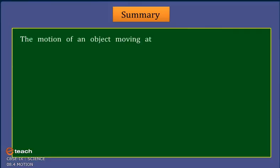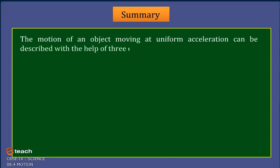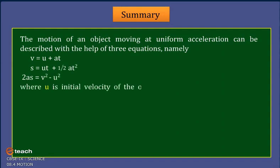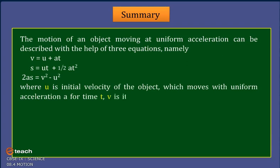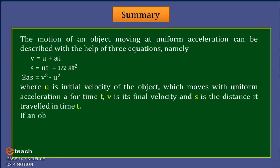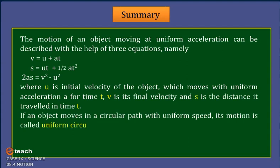Summary: The motion of an object moving at uniform acceleration can be described with the help of three equations, namely: v = u + at, s = ut + 1/2 at², and 2as = v² - u², where u is the initial velocity of the object which moves with uniform acceleration a for time t, v is its final velocity, and s is the distance it travelled in time t.